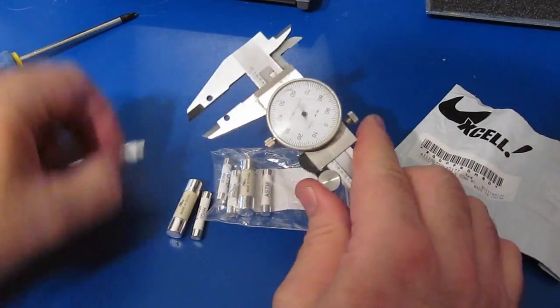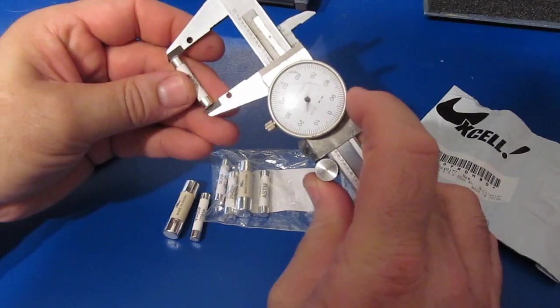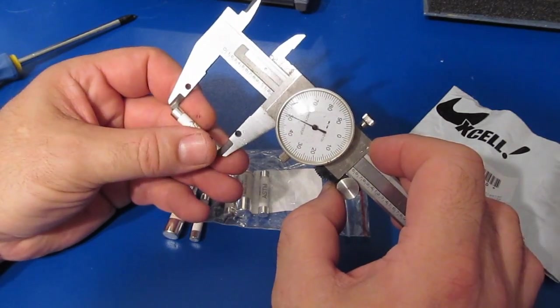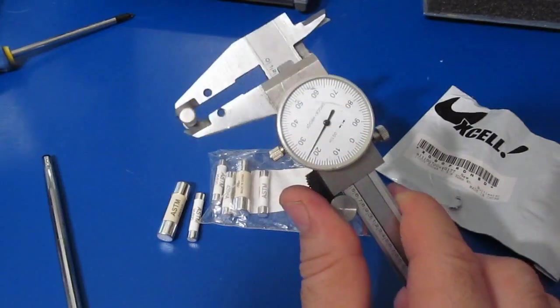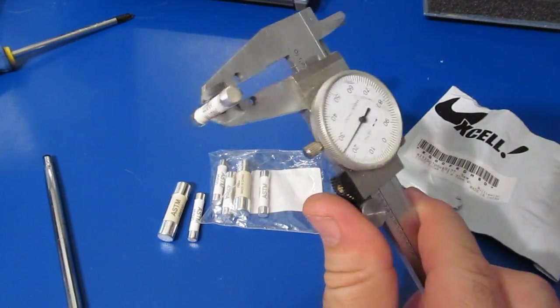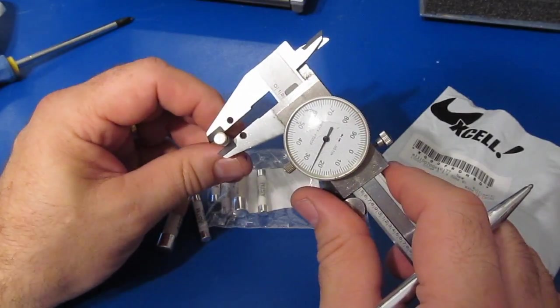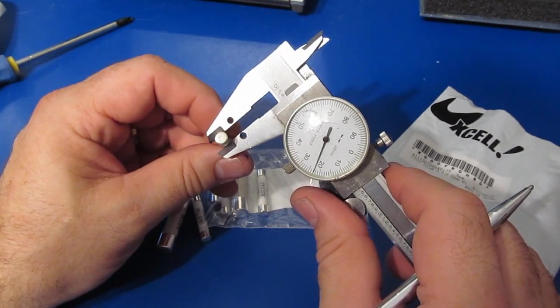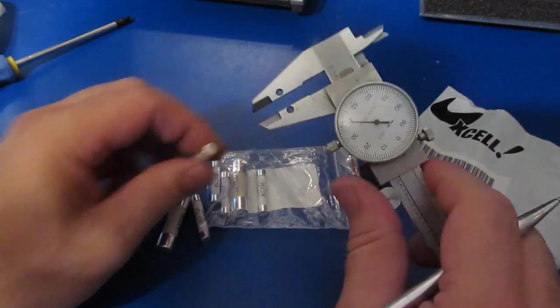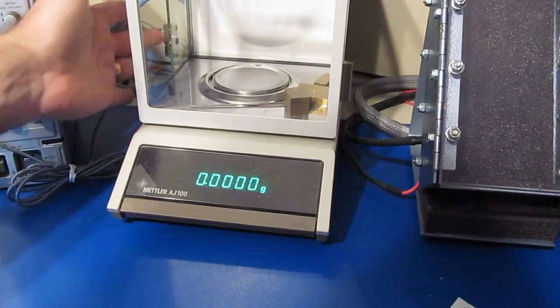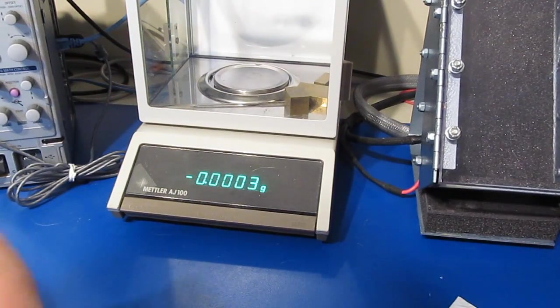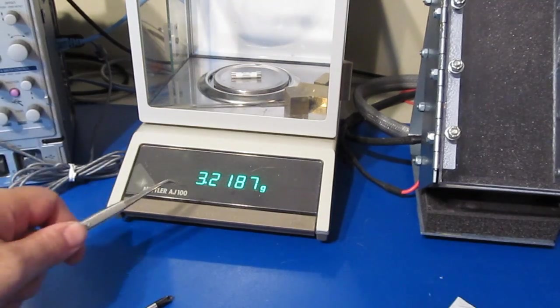So the first thing I'm going to do is measure the length of the fuse, this one happens to measure it looks like 1.251 inches. Next thing we'll do is look at the diameter of the ceramic body, it looks like that measures roughly point two two three. Next we want to measure the weight, we can see it measures roughly three point two one eight seven grams.